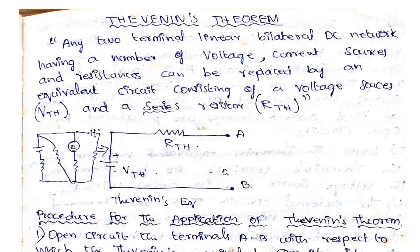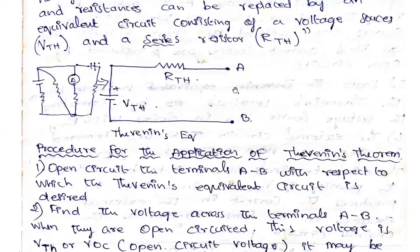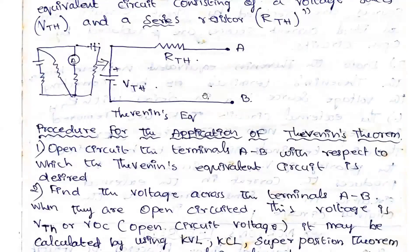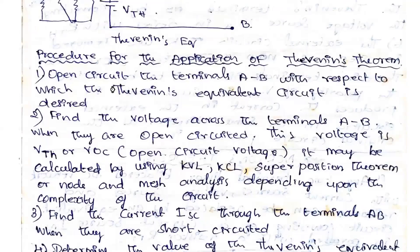First we are opening this load resistance. After that, we are adding the load resistance in series with that. Say for example, if there is a load resistance here, what we are doing is opening this circuit — opening terminals A and B — and finding out VTH and RTH. After calculating VTH and RTH, this complex circuit can be converted into the VTH and RTH equivalent. After that, we are connecting the load resistance here.